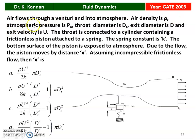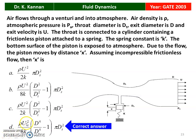Next question from the 2003 question paper: air flows through a venturi into the atmosphere. Air density is ρ, atmospheric pressure is PA, throat diameter is DT, exit diameter is D, and exit velocity is U. The throat is connected to a cylinder containing a frictionless piston attached to a spring with spring constant K. The bottom surface of the piston is exposed to the atmosphere. Due to the flow, the piston moves a distance X. The correct answer involves finding X.